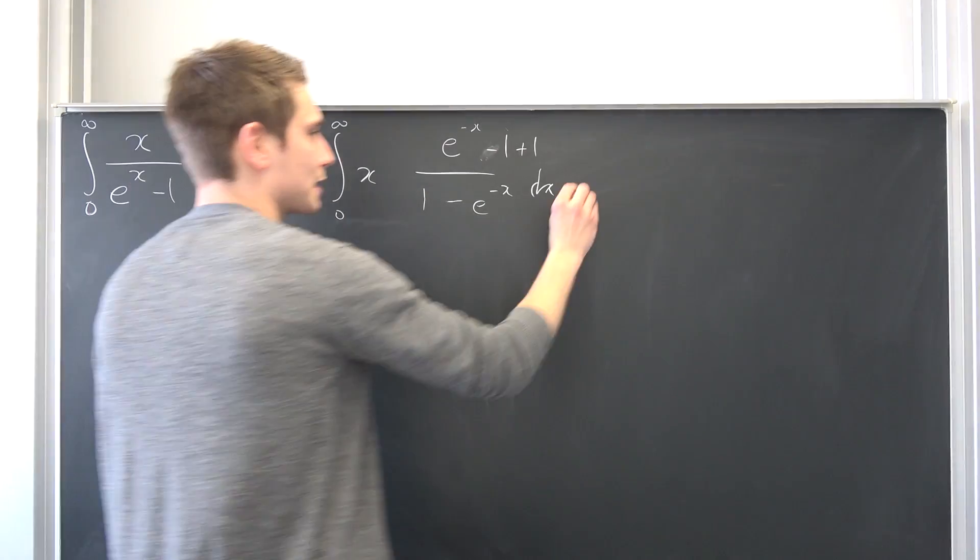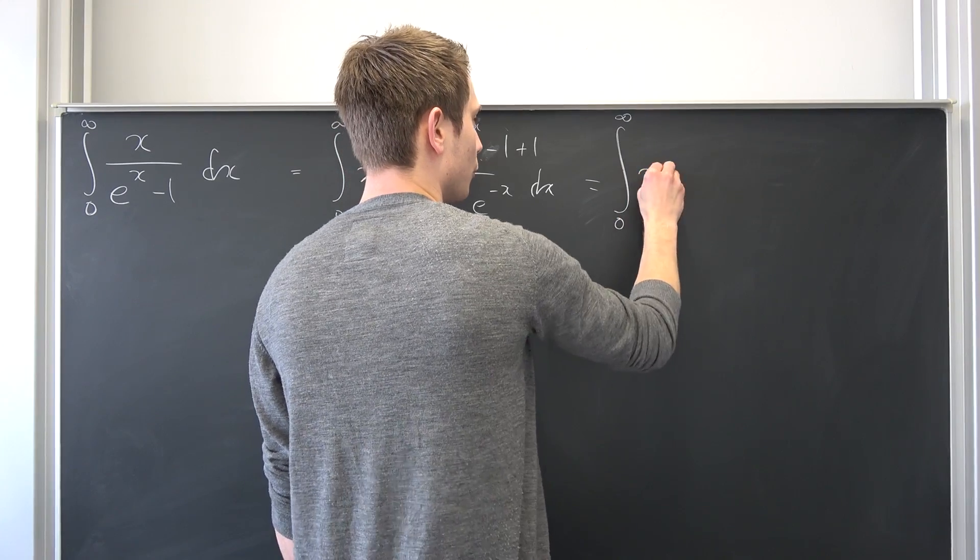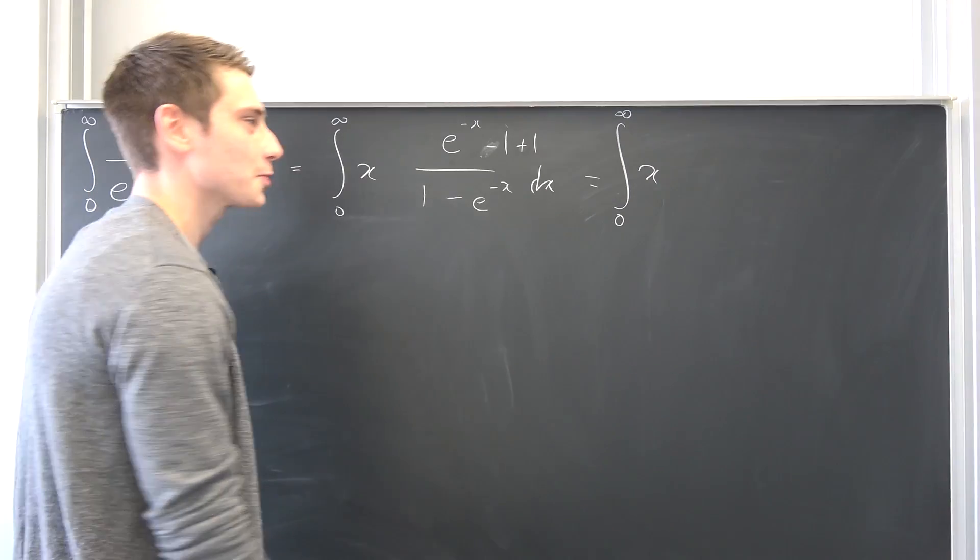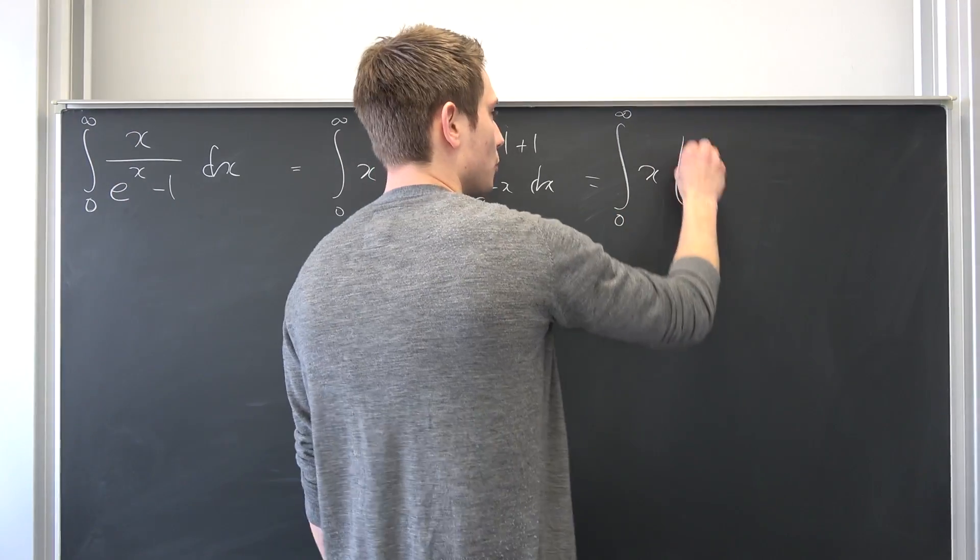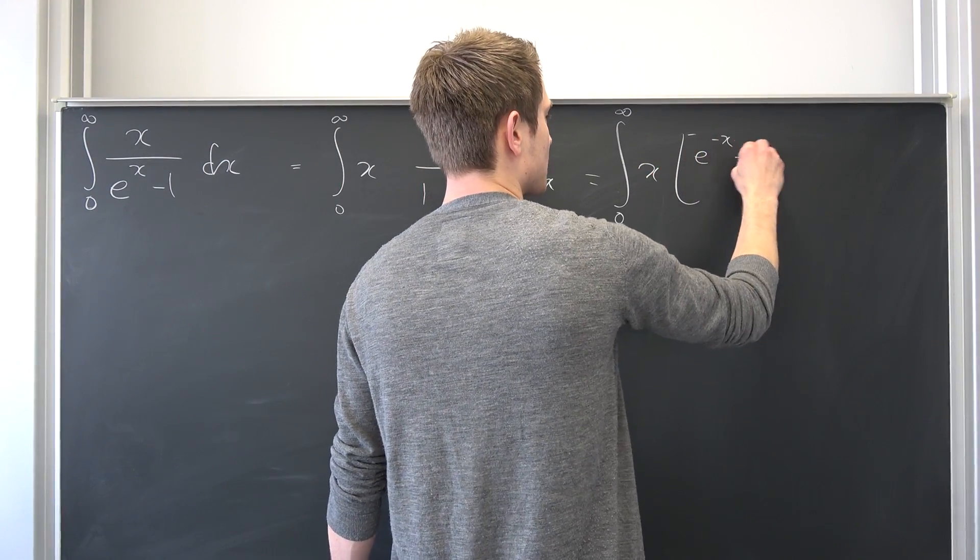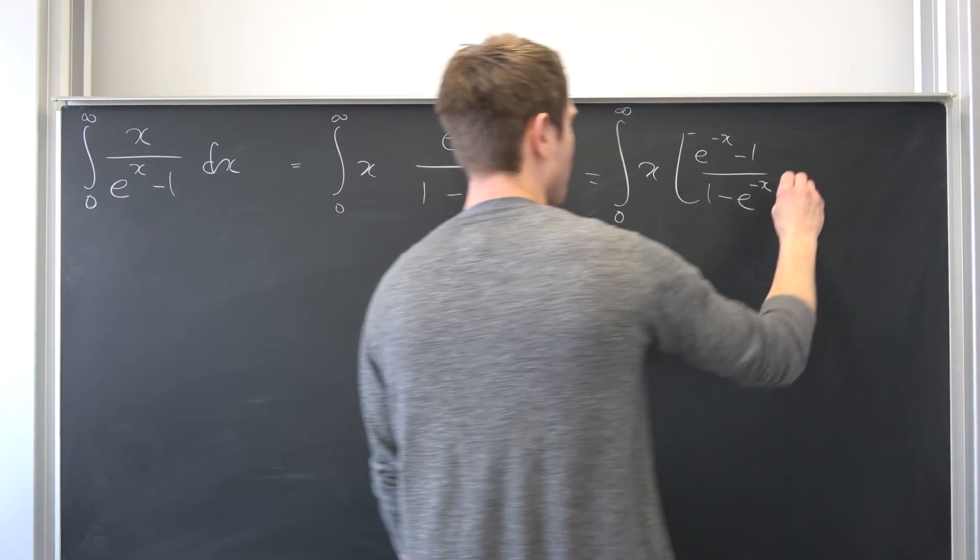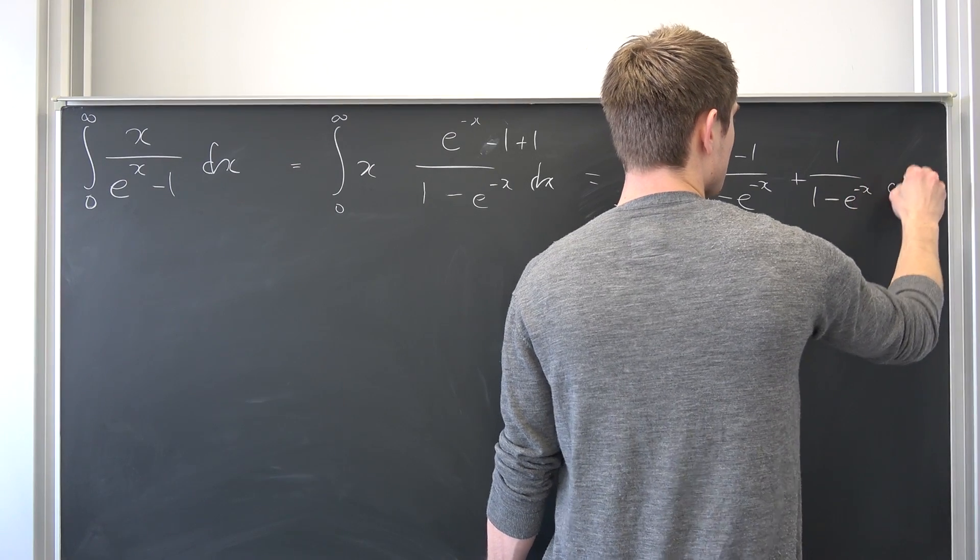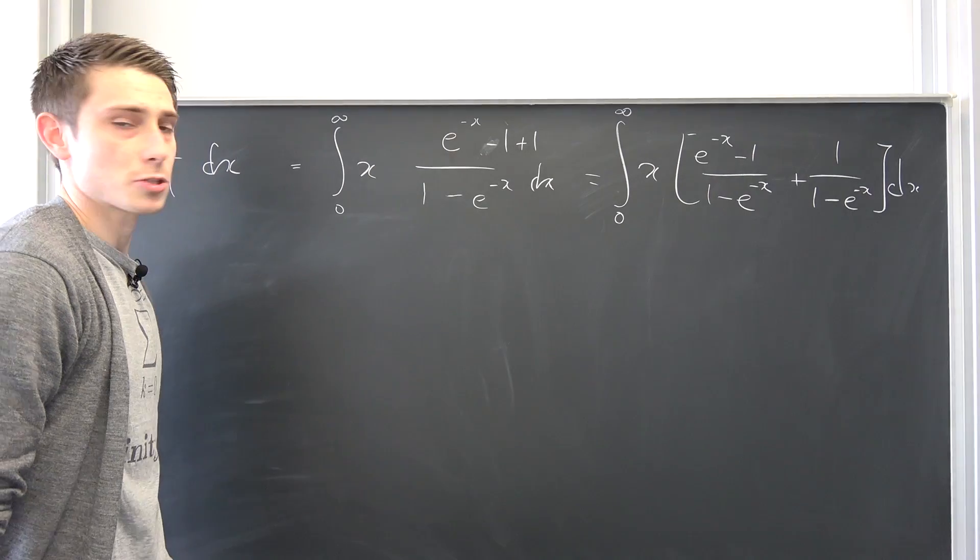Now we can use the additivity of the numerator to break this up into this fraction plus 1 over 1 minus e to the negative x. Overall, we are going to get an integral from 0 to infinity of x. Oh, that's such a beautiful integral sign, seriously. I'm so good at drawing integral signs. We're going to have e to the negative x minus 1 over 1 minus e to the negative x plus 1 over 1 minus e to the negative x dx.